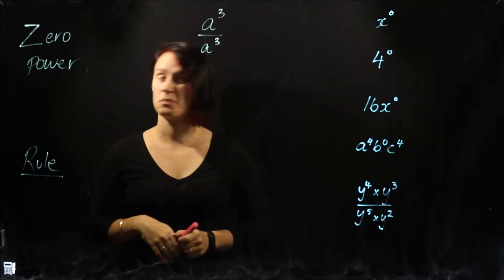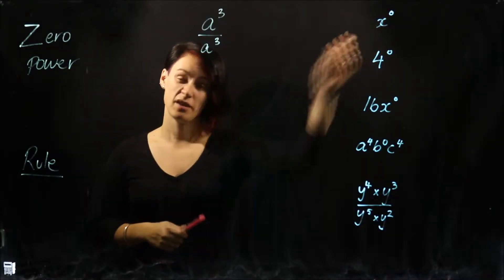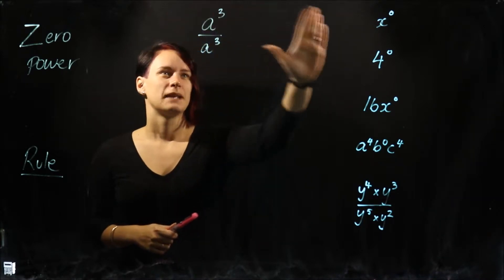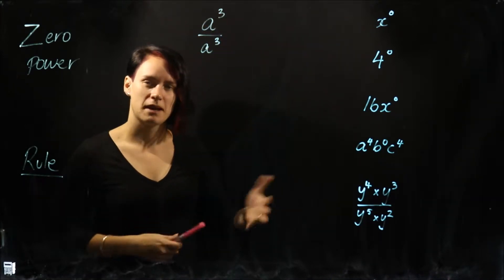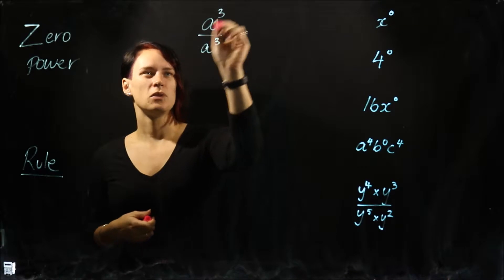We're going to learn about zero power, which is pretty much anything to the power of zero. We're going to explain how to do this by looking back at some of our old rules and saying, okay, what does this mean?